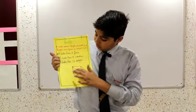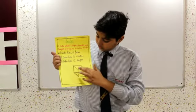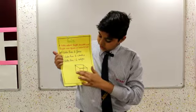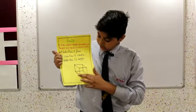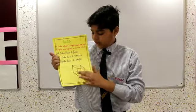A cube has twelve edges. One, two, three, four, five, six, seven, eight, nine, ten, eleven, twelve. Thanks.